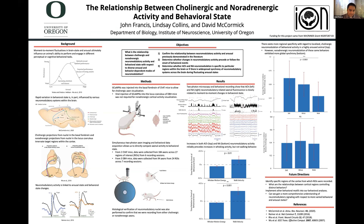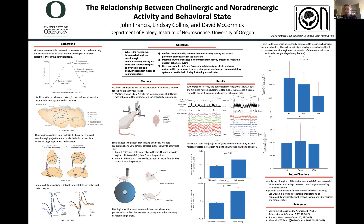During Q&A, Jacob asked about translatable aspects of the research. John explained the big question is how neurological activity impacts observable human behavior. This mouse-based study provides a mammalian starting point for understanding the relationship between behaviors and specific neural circuitry, revealing how complex neural circuitry influences day-to-day tasks — which in humans would be more complex than whisking or walking.